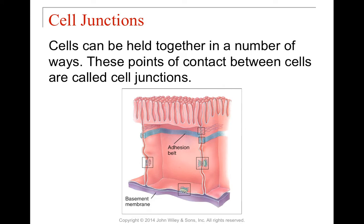Cells are held together by junctions. Basically, any point of contact between one cell and another is called a cell junction. We have a couple of different types. This here is an adhesion belt, which is more like a Ziploc bag — a much longer series of adhesions. But we can also have smaller things like snaps, such as desmosomes and hemidesmosomes.